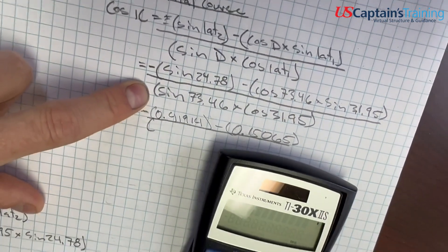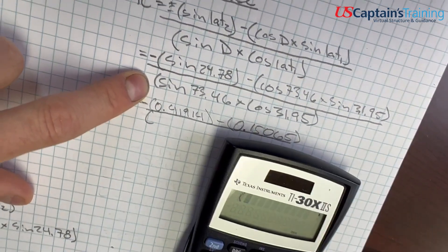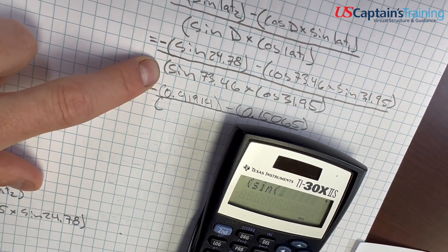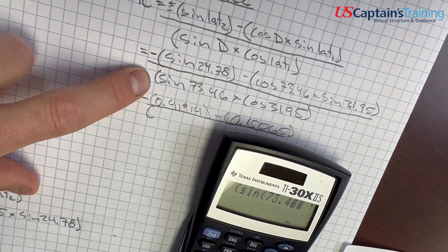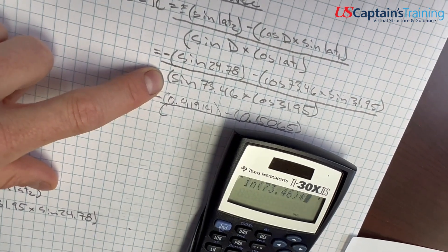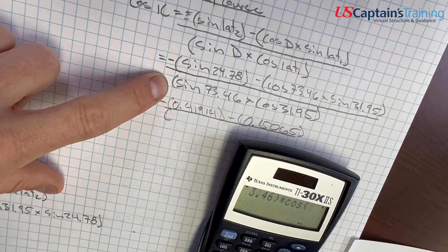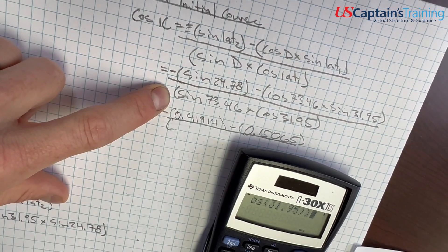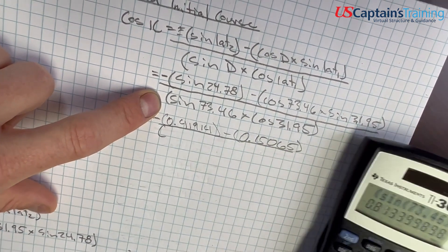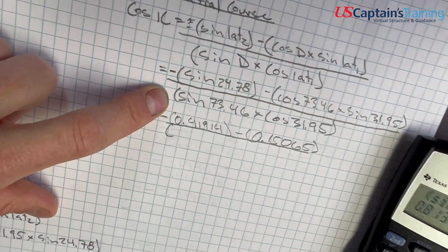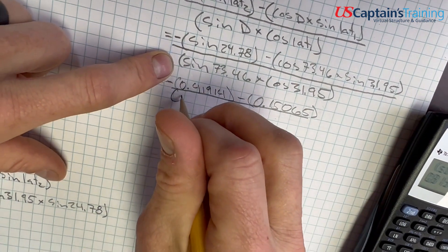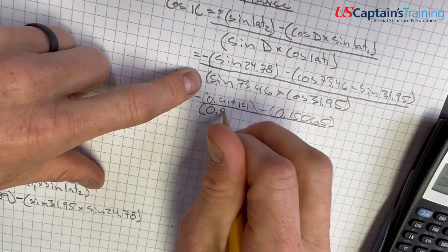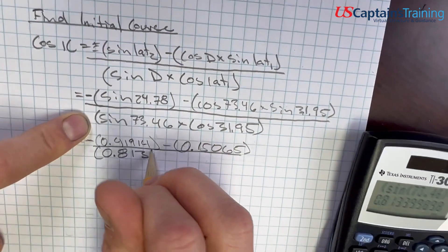Open the parentheses, and sine 73.46, close, times, cosine, 31.95, close, close, enter, 0.8134.